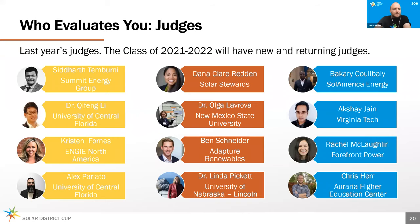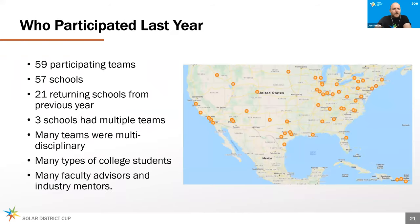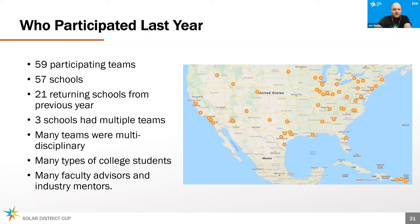This is our third year of the competition, and we have had just about 60 teams participate each year. Last year we had 59 teams from 57 distinct institutions across the United States. About a third were returning schools. Some schools had multiple teams — different groups of students within a single class, different clubs, or different campuses. We saw many teams that were multidisciplinary, with someone from business, marketing, engineering, sustainability, or urban planning participating together.